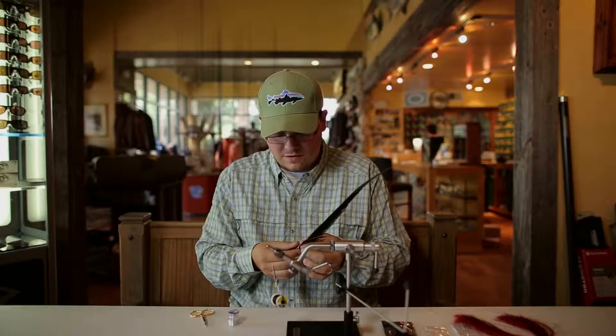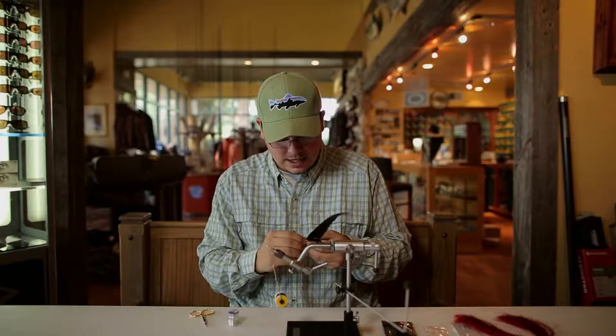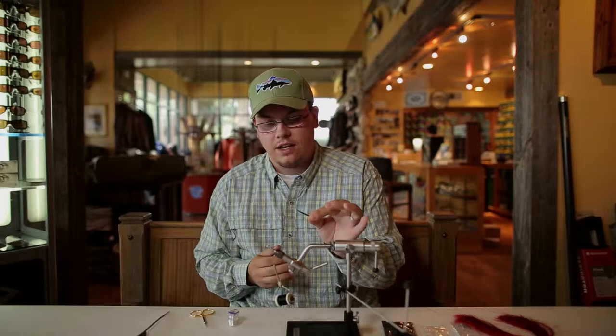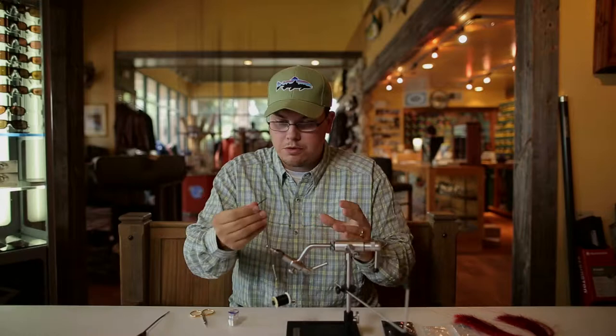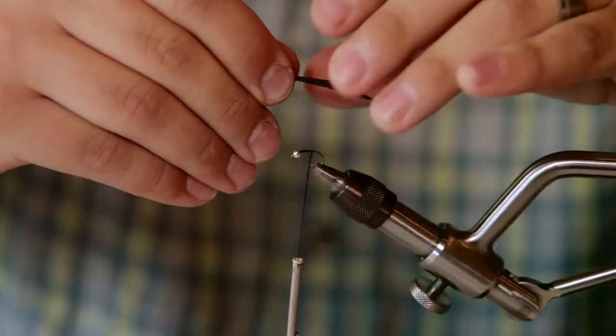And then the tail fibers for this fly are going to be just your standard pheasant tail. This one is in a melanistic black. If you can't get your hands on melanistic pheasant tail, standard black works just fine. So what I'm going to do is pull off about 8 to 10 fibers, make sure they're nice and even, and I'm going to tie them in right about halfway.